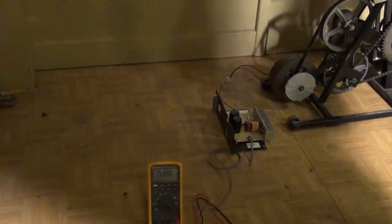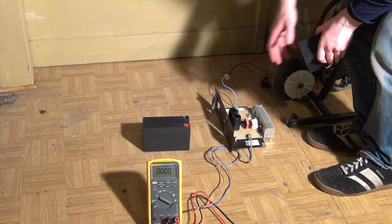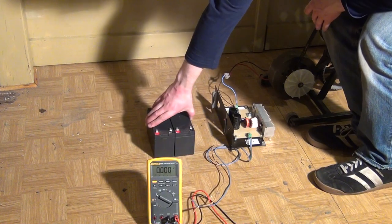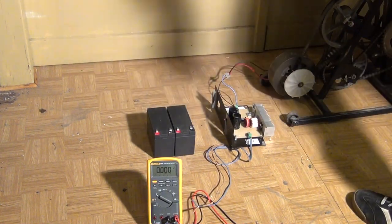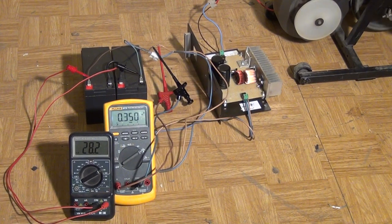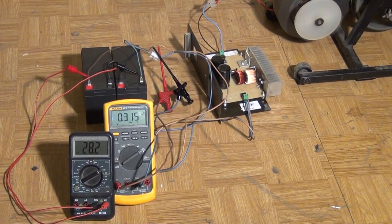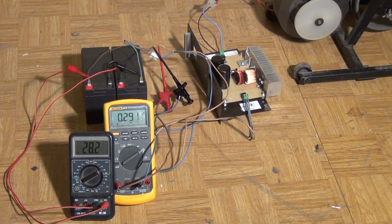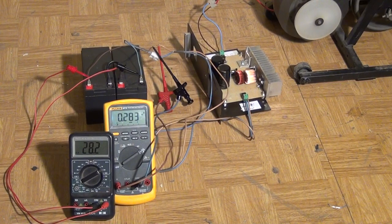It is of course also possible and in many cases more reasonable to charge some batteries with a bike rather than to drive a load directly while cycling. Here you see me charging two 12V 7.2Ah lead acid batteries. The charging current is a couple of hundred milliamps but could be much higher if necessary.